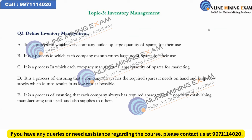Define inventory management. Option A: it is a process in which every company builds up large quantity of stock for their use. Option B: it is a process in which each company manufactures large number of stock for their use. Option C: it is a process in which each company manufactures large quantity of stock for marketing. Option D: it is a process of ensuring that a company always has the required stock it needs on hand and keeps stock at as low a cost as possible. Option E: it is a process of ensuring that each company always has required stock by establishing a manufacturing unit itself and also supplies to others.